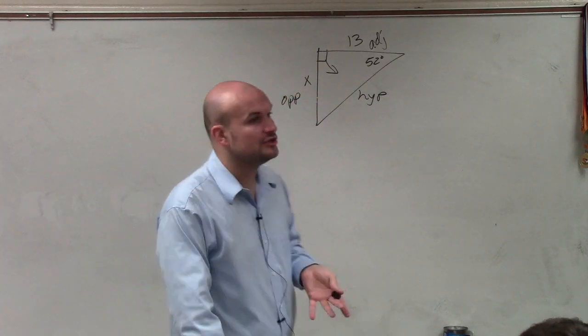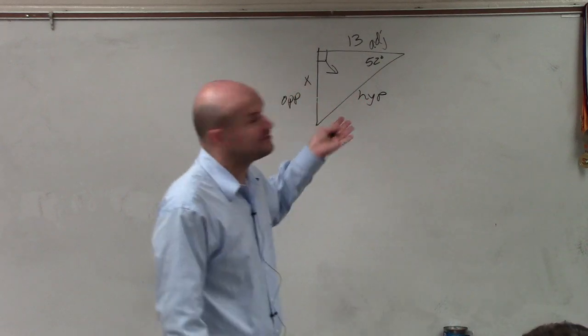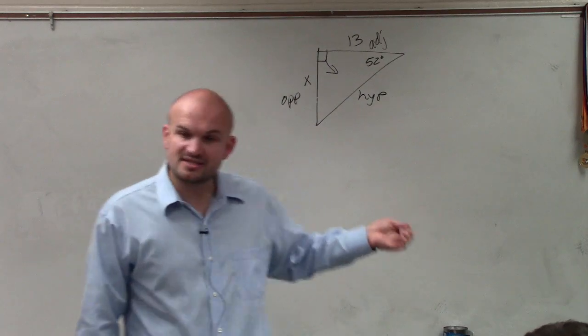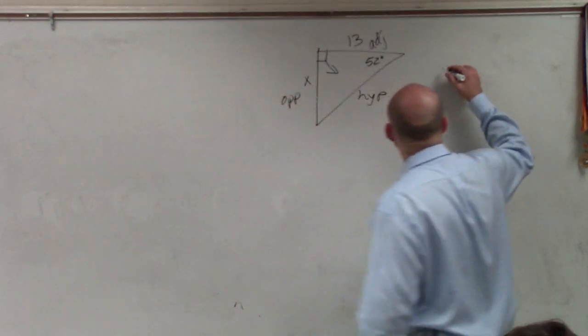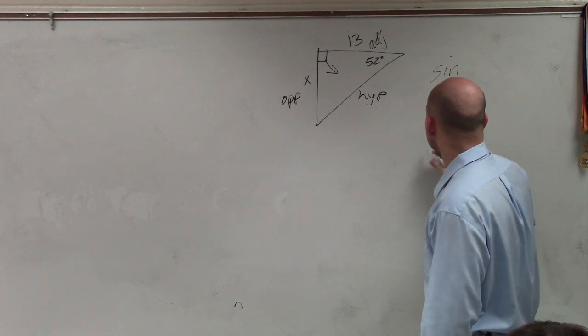So to do that, we're going to want to use our right triangle trigonometry. If we knew this was a 45-45-90 triangle or a 30-60-90, we could use special right triangles. But this is not, because we have an angle of 52 degrees. So therefore, we need to remember our three trigonometric functions: sine, cosine, and tangent.